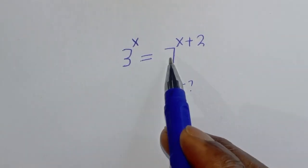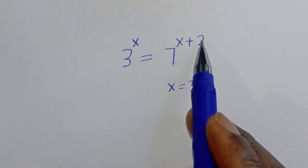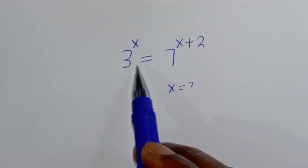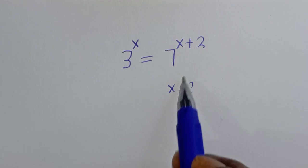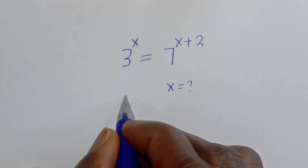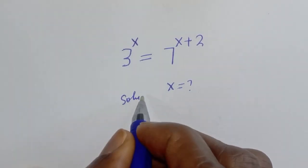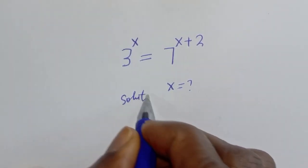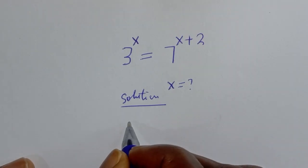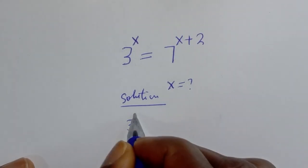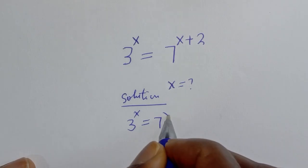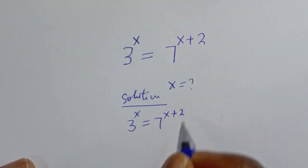3 raised to power s is equal to 7 raised to power s plus 2. What is the value of s? Hi everyone, welcome to my class. In this class, I want to find the value of s from this given equation. 3 raised to power s is equal to 7 raised to power s plus 2.